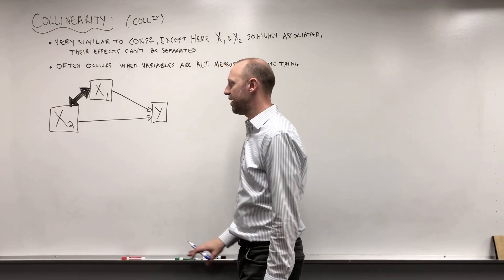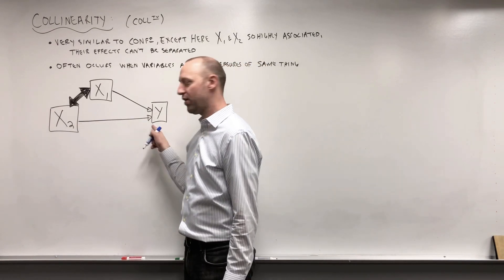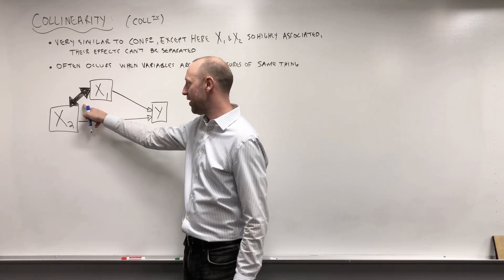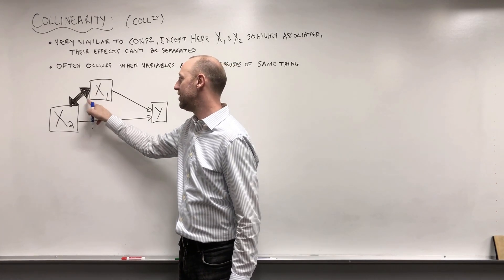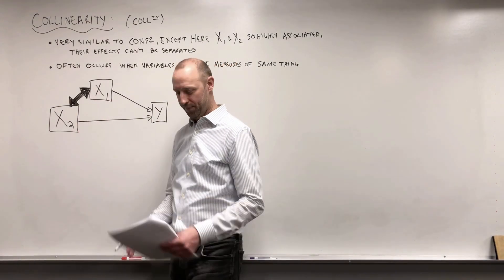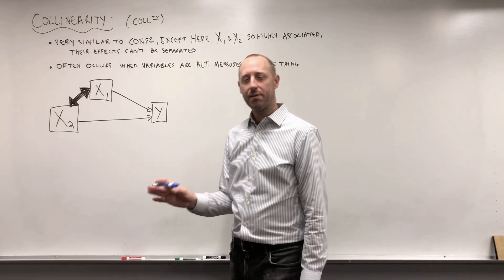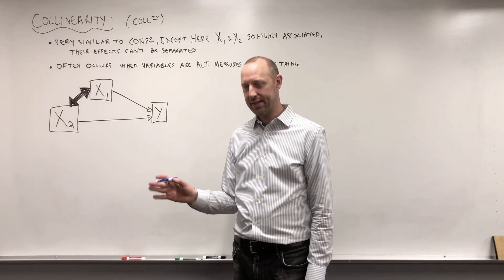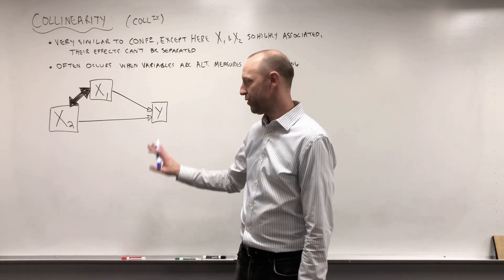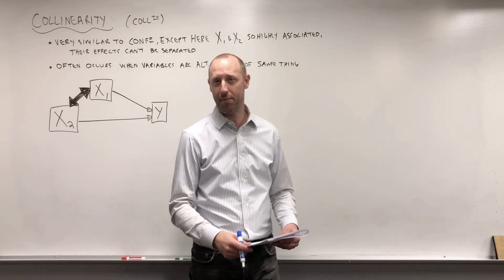The classic diagram looks very much like confounding, except I've drawn a really thick arrow here to indicate that the association between X1 and X2 is really high, so high that they cannot be separated. First, I'm going to write the criteria for it.